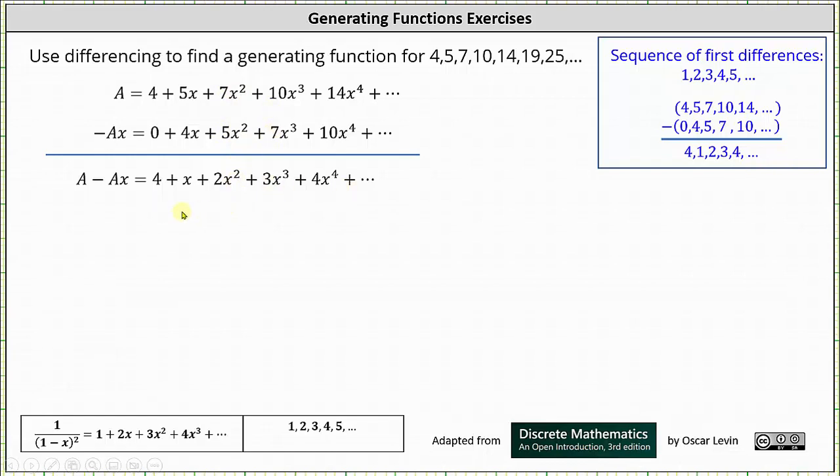On the right side, if we focus on this series of x plus 2x squared plus 3x cubed plus dot dot dot, notice how there is a common factor of x, which we can factor out, which gives us x times the quantity 1 plus 2x plus 3x squared plus dot dot dot.